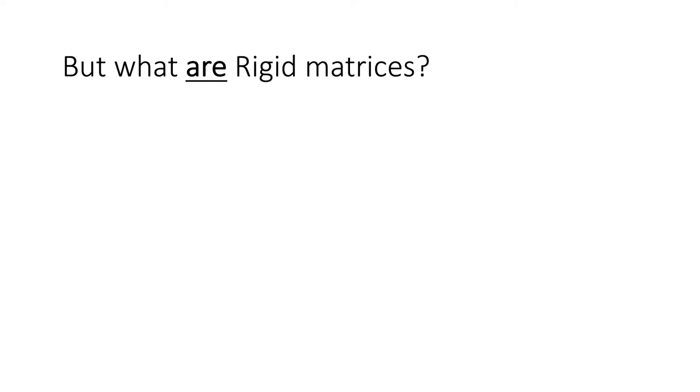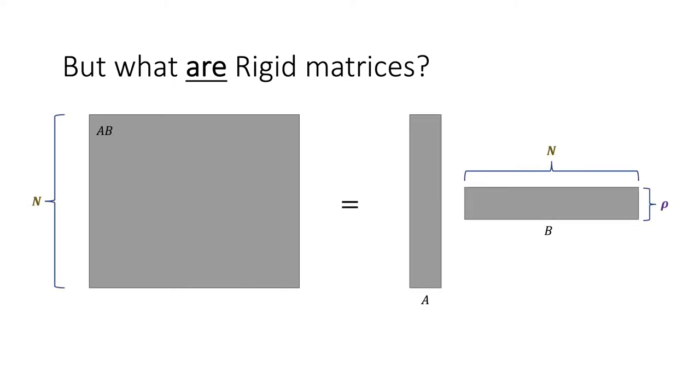But what are rigid matrices intuitively? One way I like to think about rigid matrices is that if I have a matrix given by this gray rectangle, and say this matrix is low rank, that means it can be decomposed into the product of a tall matrix A and a wide matrix B. In that sense, low rank matrices are compressible. You can take n squared bits and compress them into roughly n times rho bits, where we think of rho as smaller than n. And not only are they compressible, but they also have an efficient way to recover the data. If you want to recover a particular entry in A times B, all you have to do is take a dot product of a row of A and a column of B.